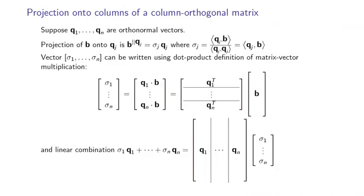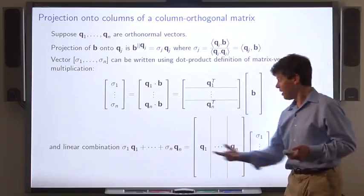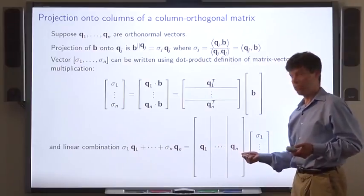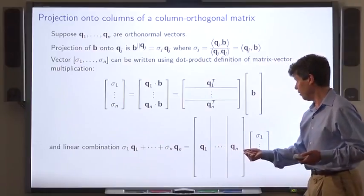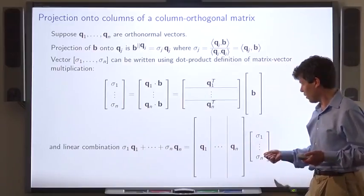And the sum of these projections is the linear combination sigma 1 times q1 plus up to sigma n qn, can be written as this matrix, whose columns are the vectors q1 through qn, times sigma 1 through sigma n.